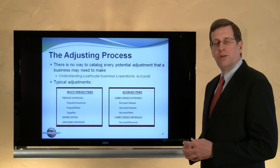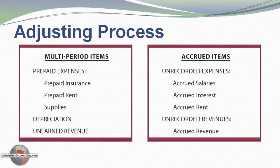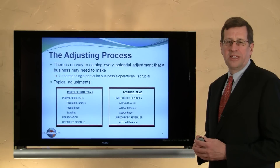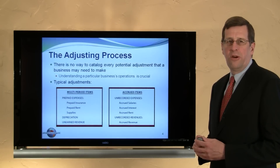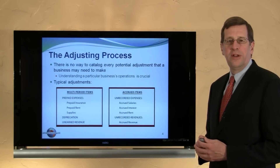Typical adjustments can relate to a variety of items. Here I have a couple of tables that talk about multi-period items such as prepaid insurance, prepaid rent, adjusting for supplies, depreciation, or the recording of unearned revenue. The accrued type items relate to things such as accrued salaries, accrued interest, accrued rent, or accrued revenues. The textbook illustrates each of these in turn; we're going to look in this video at just a few examples.